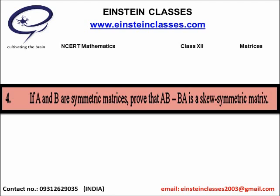That means if you take the matrix AB minus BA and call it X, we have to take the transpose of AB minus BA. If you take the transpose of AB minus BA, then this must be equal to minus of AB minus BA. This is the statement you have to prove.